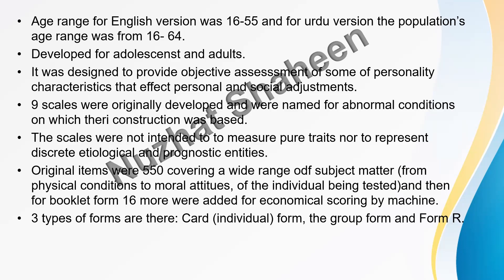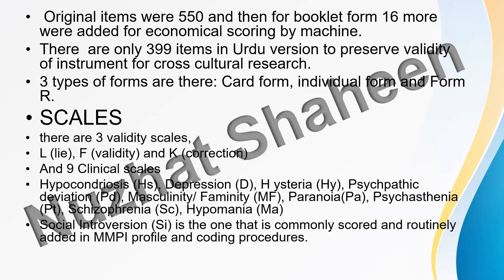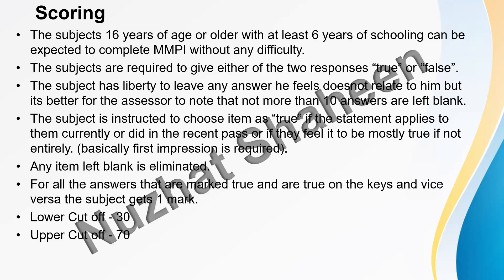There are three types of forms: a card form for individual assessment, Form R, which has been converted into Urdu. In the Urdu form, there are 3 validity scales and 9 clinical scales. The validity scales are L (Lie), F (Infrequency), and K (Correction). The 9 clinical scales are: HS (Hypochondriasis), D (Depression), HY (Hysteria), PD (Psychopathic Deviation), MF (Masculine-Femininity), PA (Paranoia), PT (Psychasthenia), SC (Schizophrenia), MA (Hypomania), and an additional scale SI (Social Introversion).